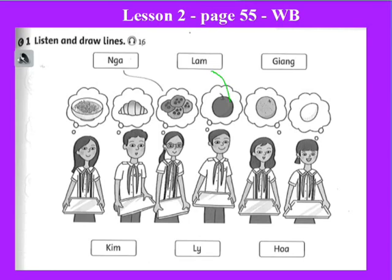Now we continue. Three: Kim chooses healthy food too. Listen — we hear the name Kim. Watch for who Kim is. She's having an orange. Good choice, Kim. Kim chose an orange — draw the line to Kim.